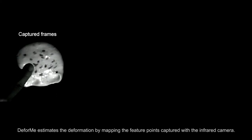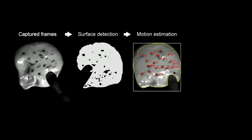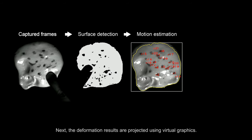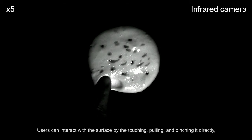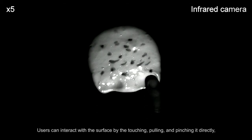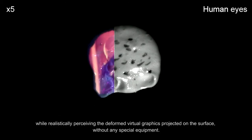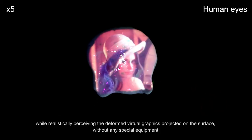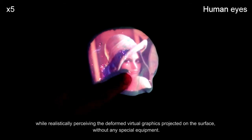Deforme estimates the deformation by mapping the feature points captured with the infrared camera. Next, the deformation results are projected using virtual graphics. Users can interact with the surface by touching, pulling, and pinching it directly, while realistically perceiving the deformed virtual graphics projected on the surface without any special equipment.